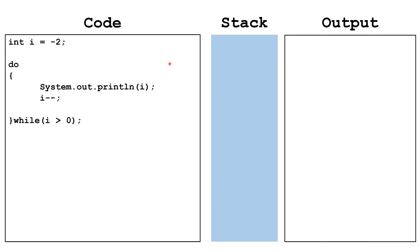Another kind of loop that is not required for the AP Computer Science A exam, but is still very useful, is the do-while loop. A do-while loop checks the boolean expression at the end of the loop, so it will always execute at least one time. In this example, int i equals negative two. We execute System.out.println(i) and decrement i by one. Then we check: is i greater than zero? It is not, so we terminate the loop. Note that at the end of the while in a do-while loop, we have a semicolon.